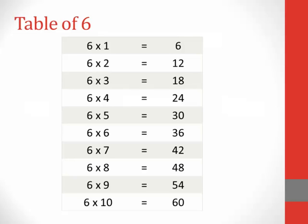Table of 6. 6 1s are 6, 6 2s are 12, 6 3s are 18, 6 4s are 24, 6 5s are 30, 6 6s are 36, 6 7s are 42, 6 8s are 48, 6 9s are 54, 6 10s are 60.